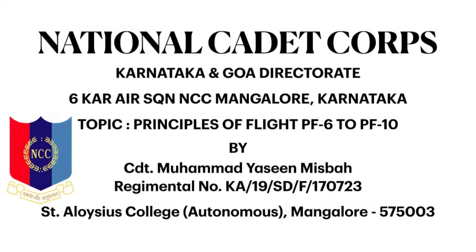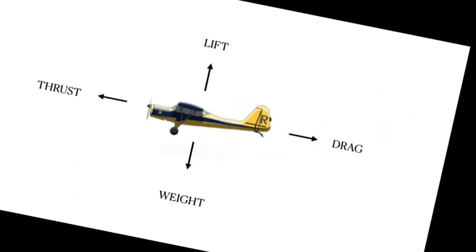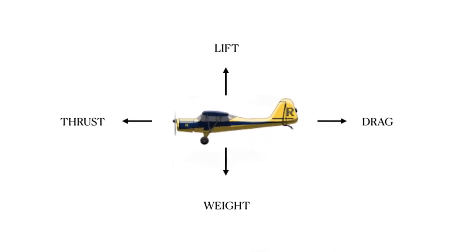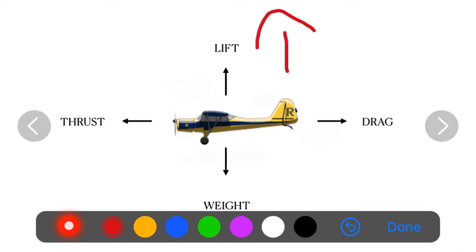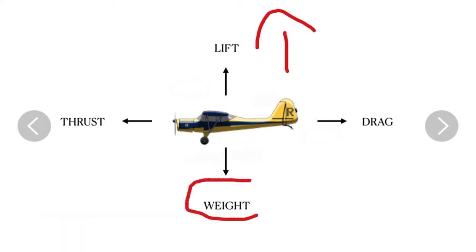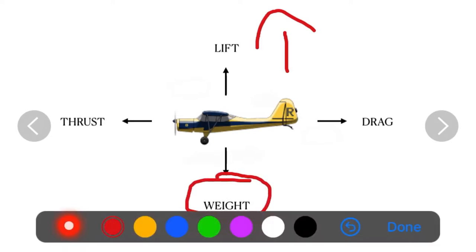Let us begin by looking at the different forces that are acting on an aircraft during level flight and how these forces interact with each other. The first force is lift, which causes the airplane to essentially rise up into the air. The more lift is produced, the faster the airplane will climb upwards. The next force, opposite to lift, is weight or gravity, which pulls the airplane downward towards the ground.